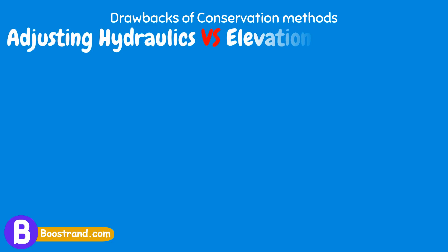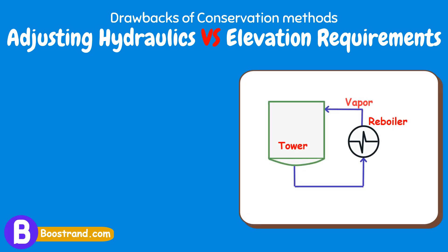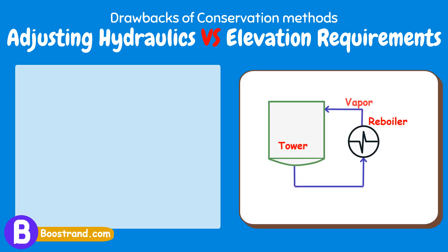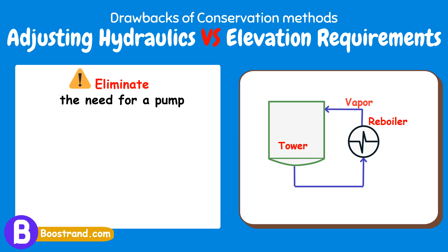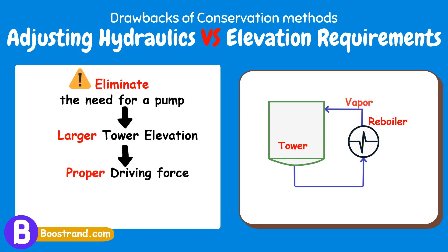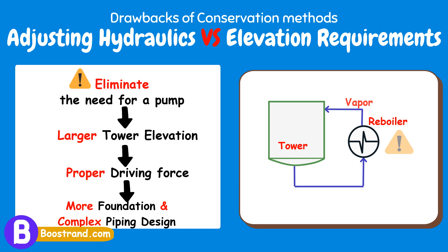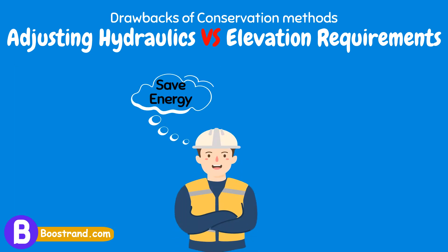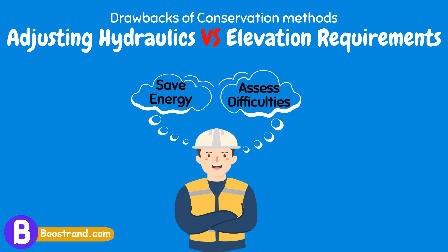Another example of engineering difficulties engineers may face is when using once-through reboilers in a tower configuration. As highlighted before, this shall eliminate the need for a pump, which is great. However, this shall also lead to a larger tower elevation to ensure proper driving force. This means more foundations and complex piping design, and in some cases it may be difficult to achieve the required design that provides proper recirculation from the tower to the reboiler and back. So as we are putting energy savings in mind, we should assess the difficulties we shall face and ensure they are well addressed.